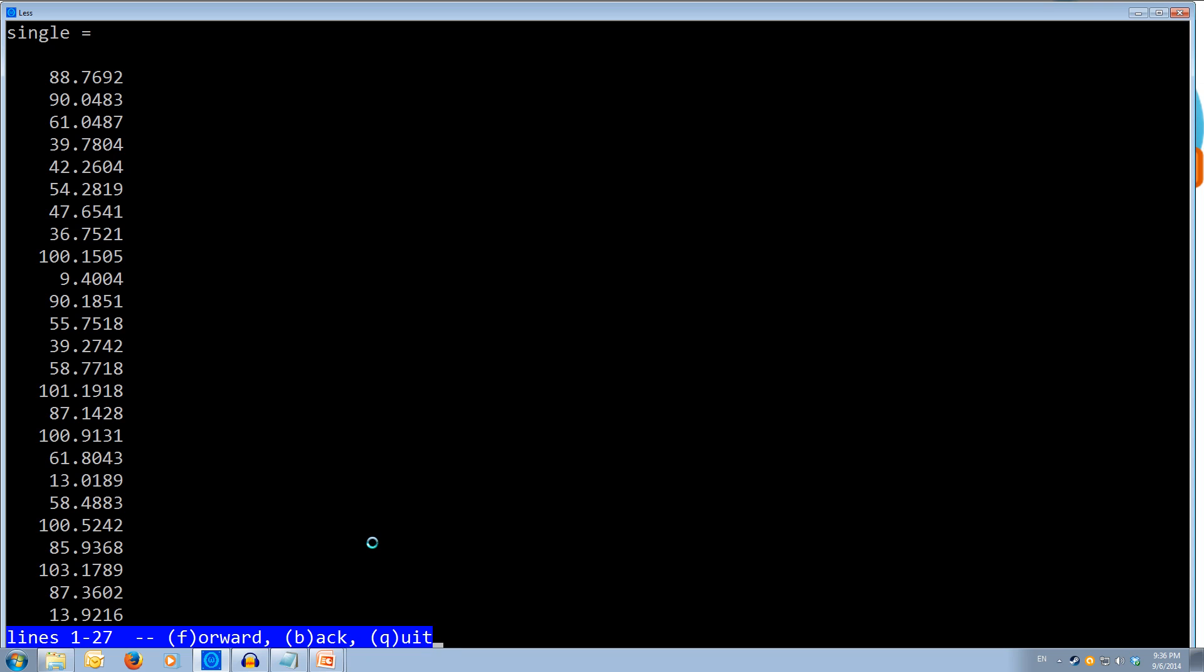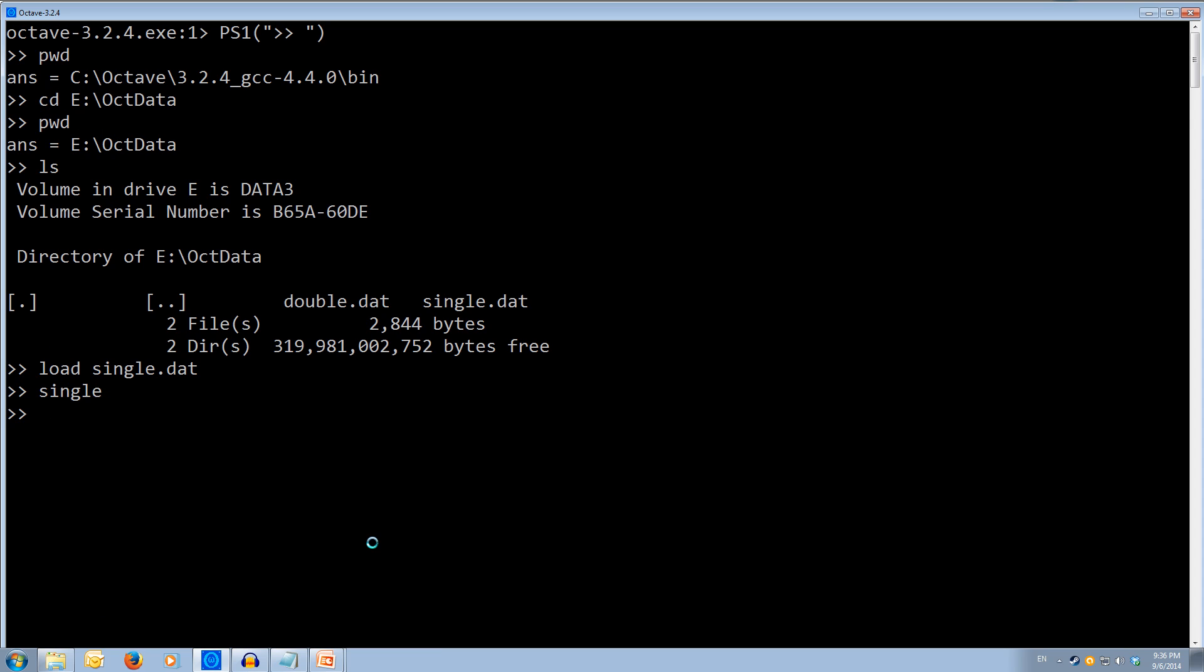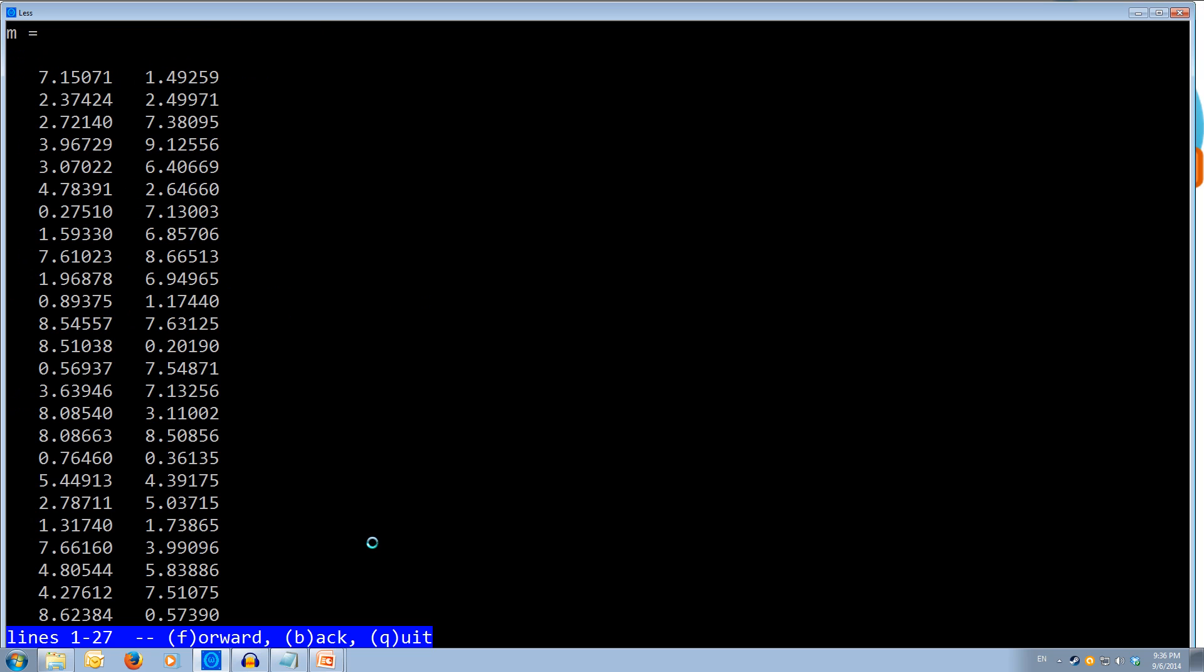So as you can see, it's just some random numbers. Ok, so I can also load in data into a variable of my choosing. So if I use m, I'm going to save my data into a variable called m and make that equal to load and I'm going to use the brackets this time and specify the file. So load open quotes double dot dat, close quotes. So I'm going to load the double dot dat file in this time.